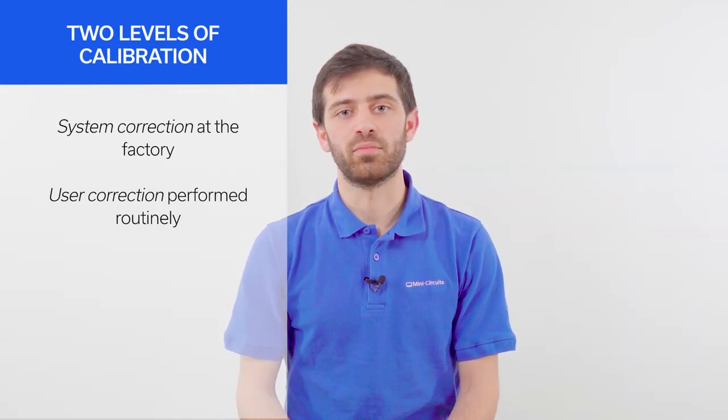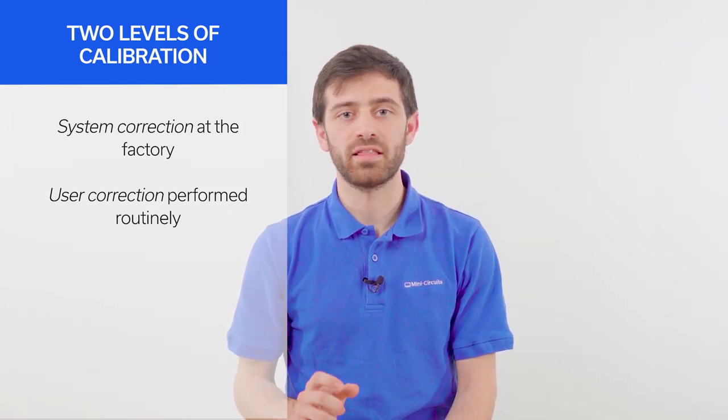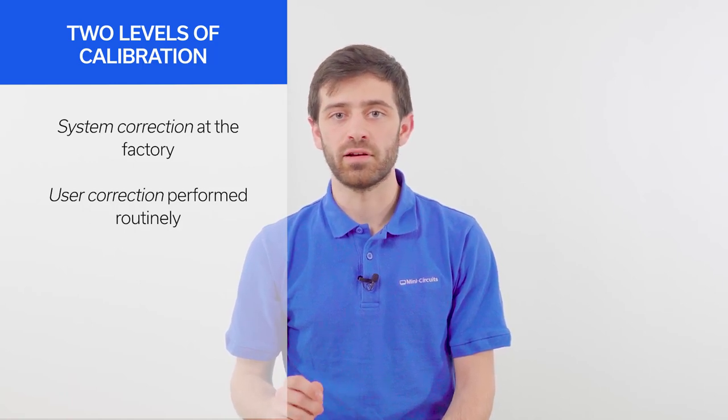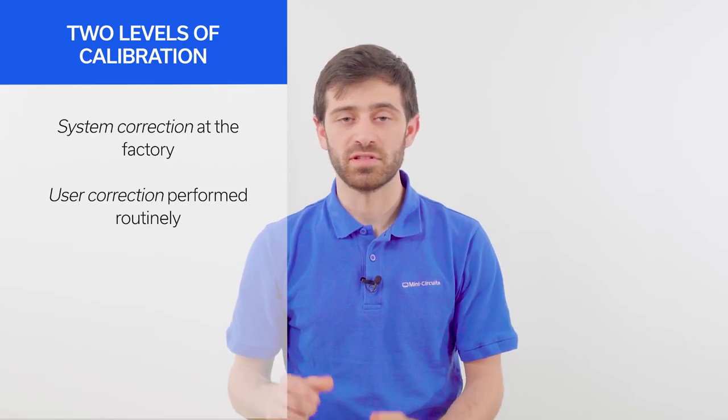Calibration is the process of acquiring the error terms that describe the systematic errors through measurements of known calibration standards. The eVNA has two levels of calibration. System correction is performed only once and done at the factory. User correction is done routinely by the operator to ensure accurate results, and that's what we're going to be walking you through today.